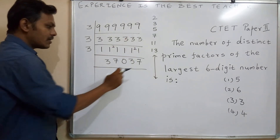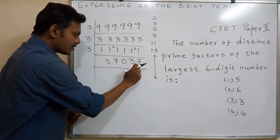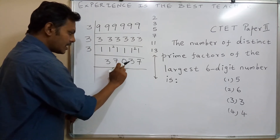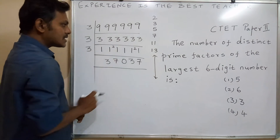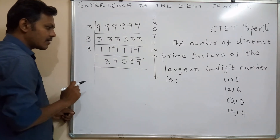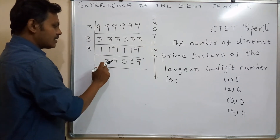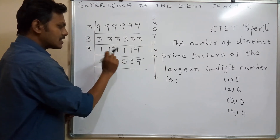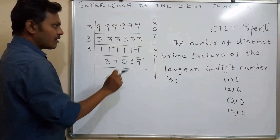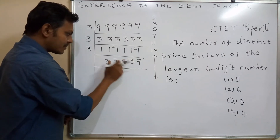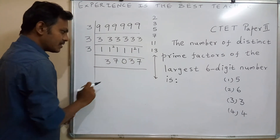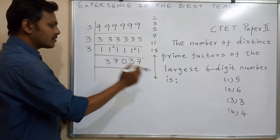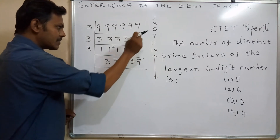The next prime number is 7. We are going to check whether 37,037 is divisible by 7. The divisibility rule for 7: take twice the last digit, subtract it from the rest of the number, and repeat to reduce the number step by step until it is easy to check.